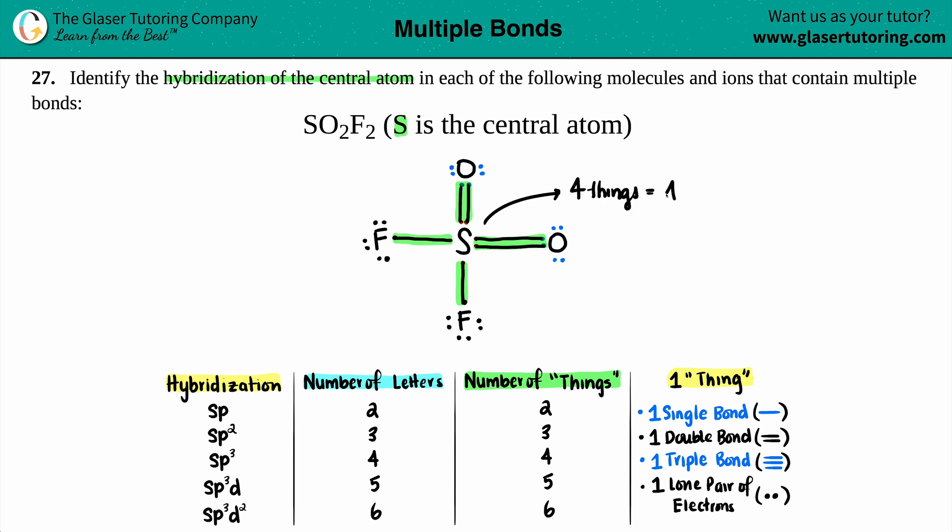So sulfur's got four things. So four things, four letters, drum roll, please, sp3. And that is your hybridization for the sulfur.